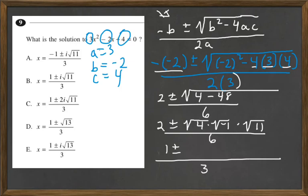What's the square root of 4 up here? Well, that's 2, and the square root of negative 1 is i, so 2i times the square root of 11, all divided by 3.